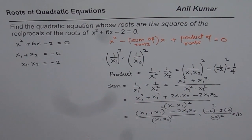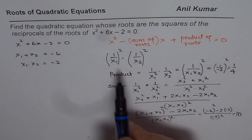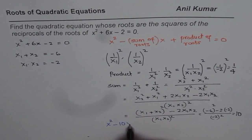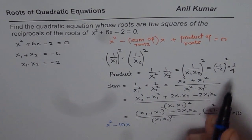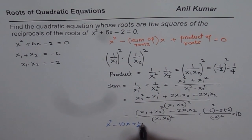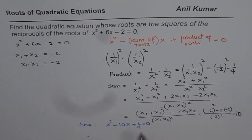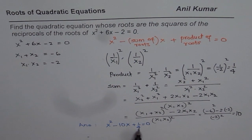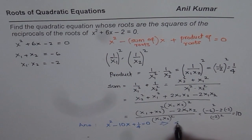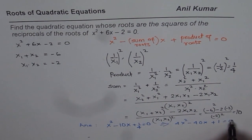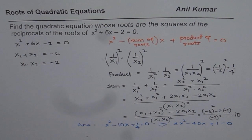Now that we know the sum is 10 and the product is 1 over 4, we can write the new equation: x squared minus 10x plus 1 over 4 equals to 0. To write it in standard form without fractions, we multiply every term by 4, giving us 4x squared minus 40x plus 1 equals to 0. That is the solution for the given question.